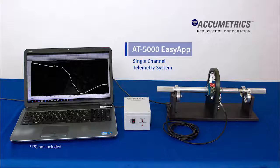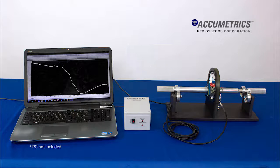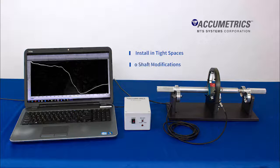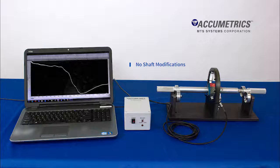Accumetrix single channel telemetry systems allow for a simple way to measure torque, temperature, or voltage from a rotating shaft. They are designed for easy installation into tight spaces without requiring shaft modifications on existing machinery.